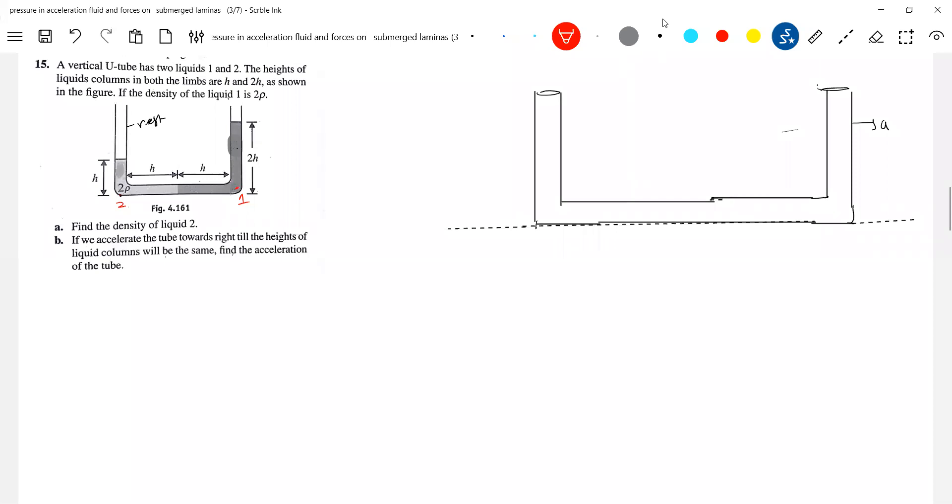Pressure rate 1 should be equal to pressure rate 2. So get into the mathematics. What is the pressure rate 1? We don't know density of liquid. I'll call it as rho 1. This should be equal to P0 plus rho 1 G times 2H.